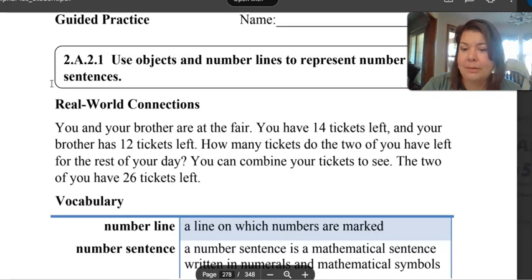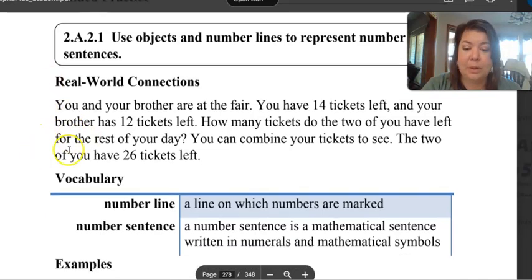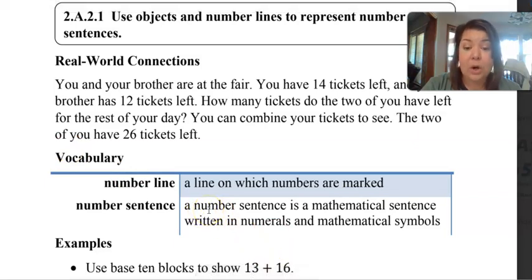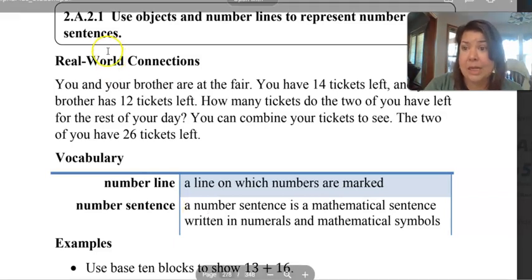We do a lot of language arts and math, don't we? So you know what a number line is? It's a line where the numbers are marked, and a number sentence is a mathematical sentence written in numerals and mathematical symbols. That sounds complicated. Let's take a look at that.